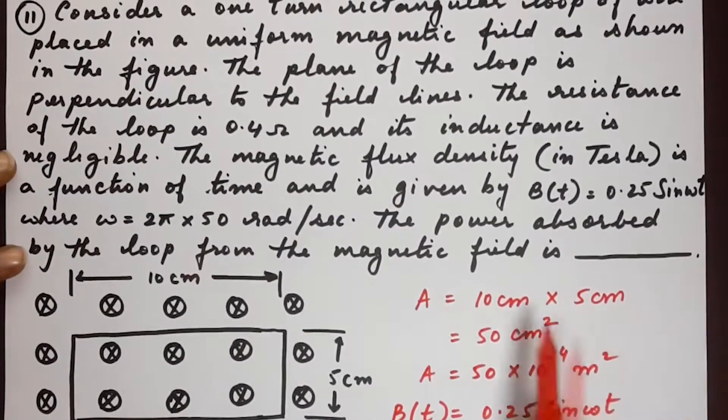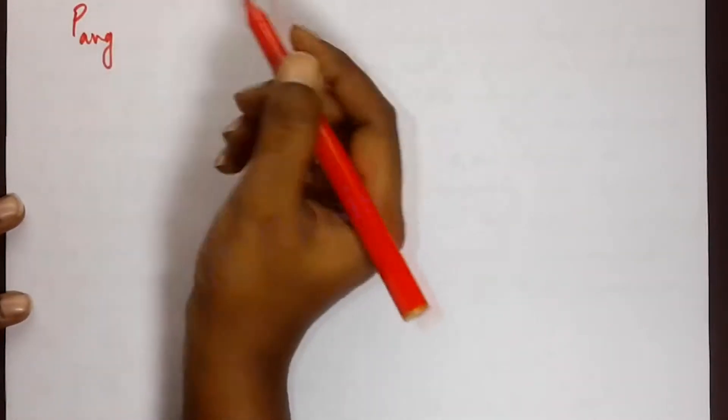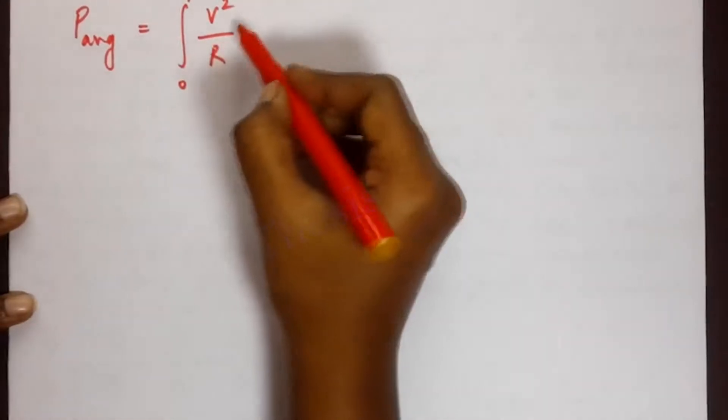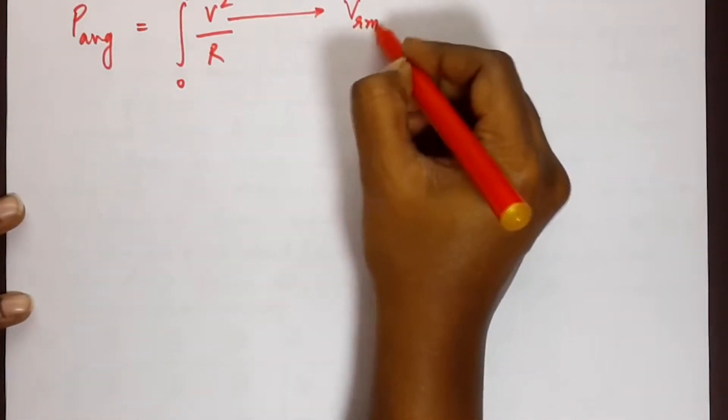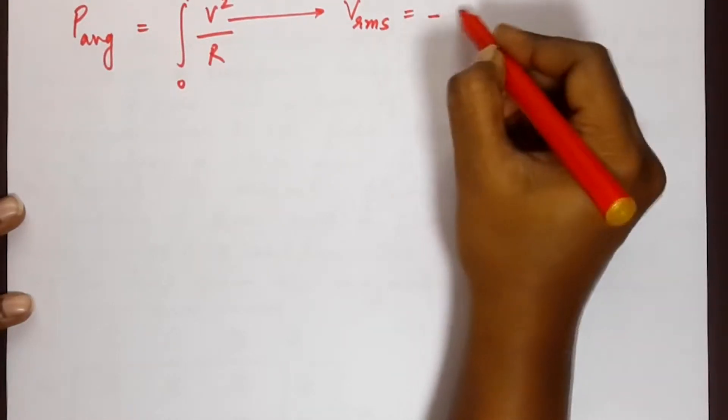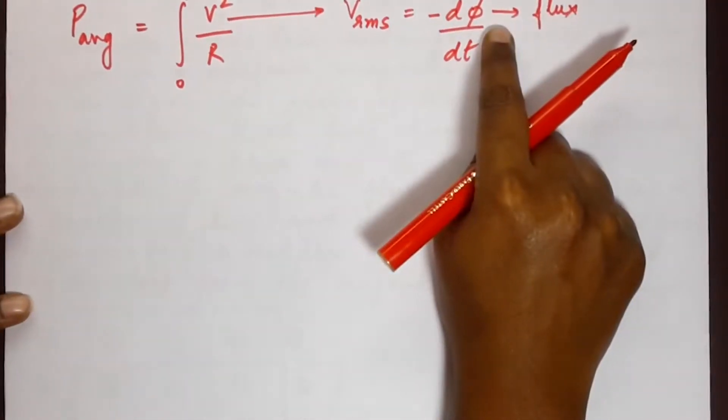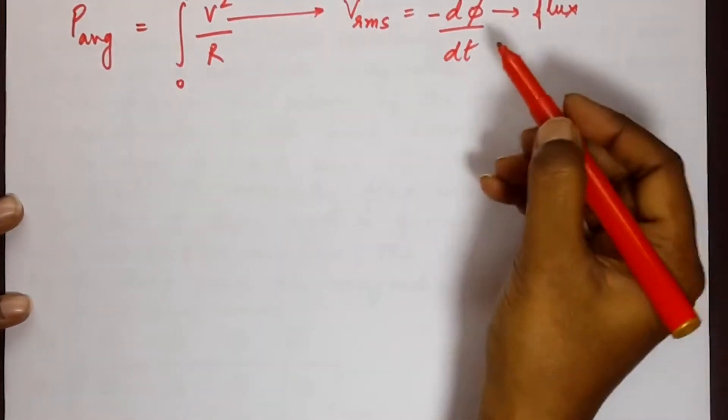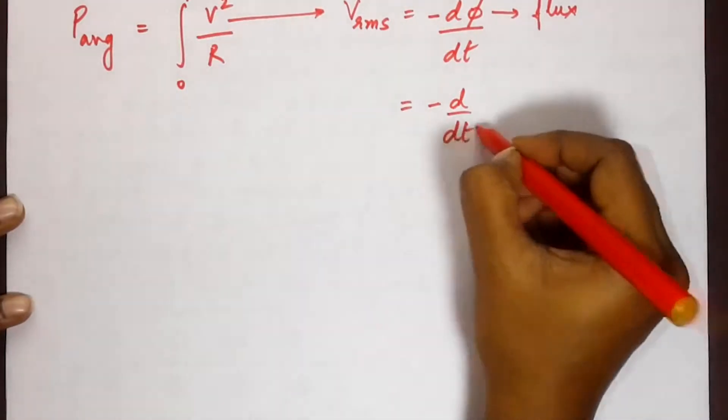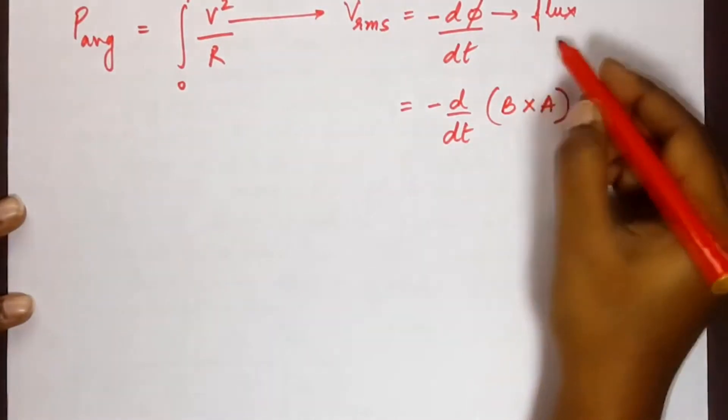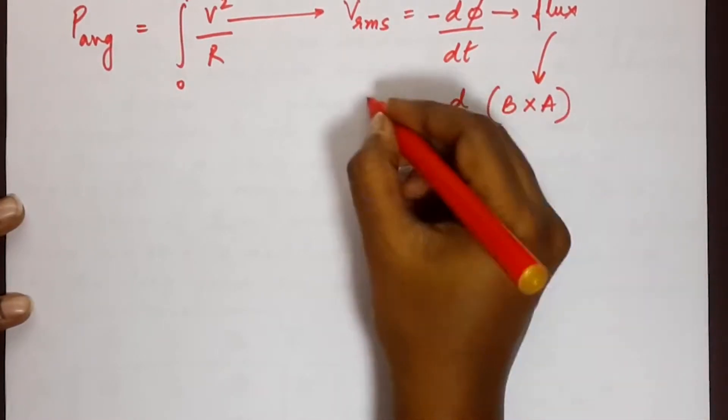Now to solve it we need to find the power absorbed which can be denoted by the average power. So power average equals integral 0 to t v square by r. This v here is v rms and the rms voltage can be found by using the equation minus d phi by dt where phi is the flux. Now we don't have flux either. What we have been given is the magnetic flux density. So we can write this as minus d by dt of magnetic flux density into area. Now flux is density times area. So this is v.